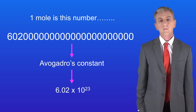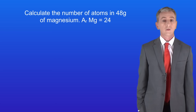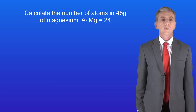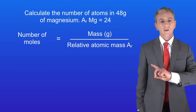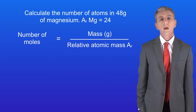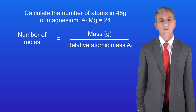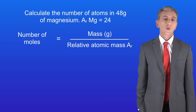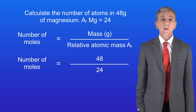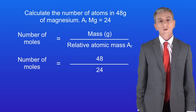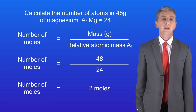Here's a sample question: calculate the number of atoms in 48 grams of magnesium. We've not been given the number of moles, so we need to calculate this from the mass using the equation: number of moles equals mass in grams divided by the relative atomic mass. We have 48 grams of magnesium and the relative atomic mass of magnesium is 24 — remember that you are given all the numbers you need in your exam. So this means that we've got two moles of magnesium.